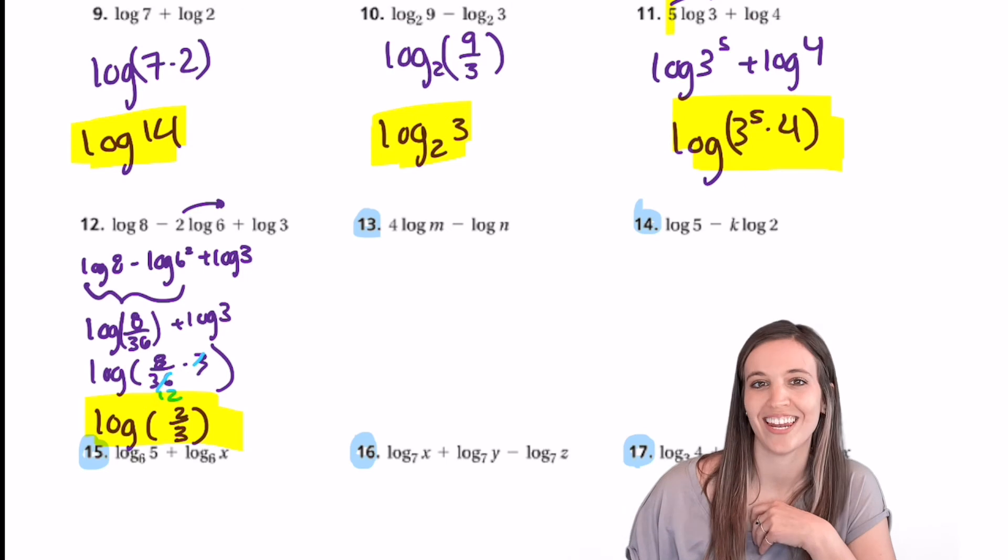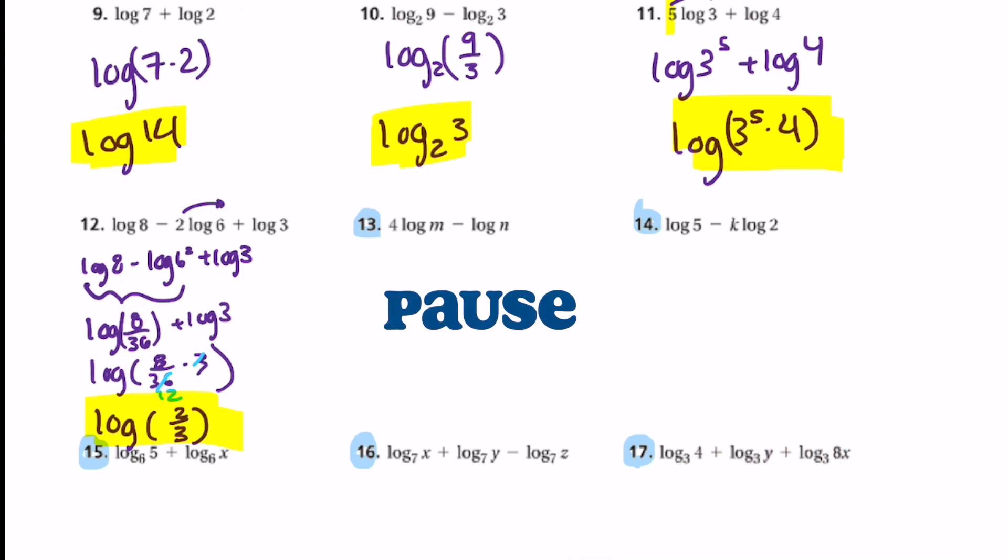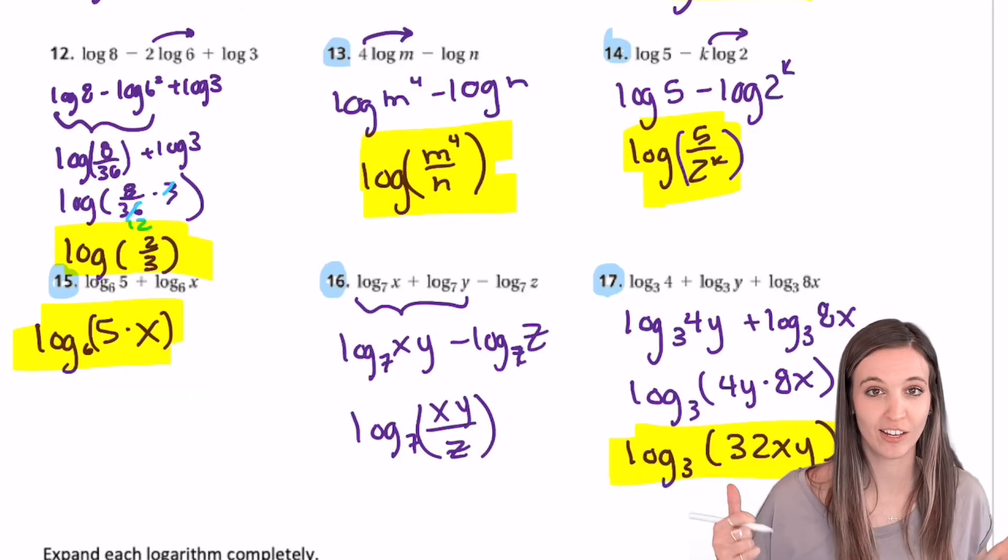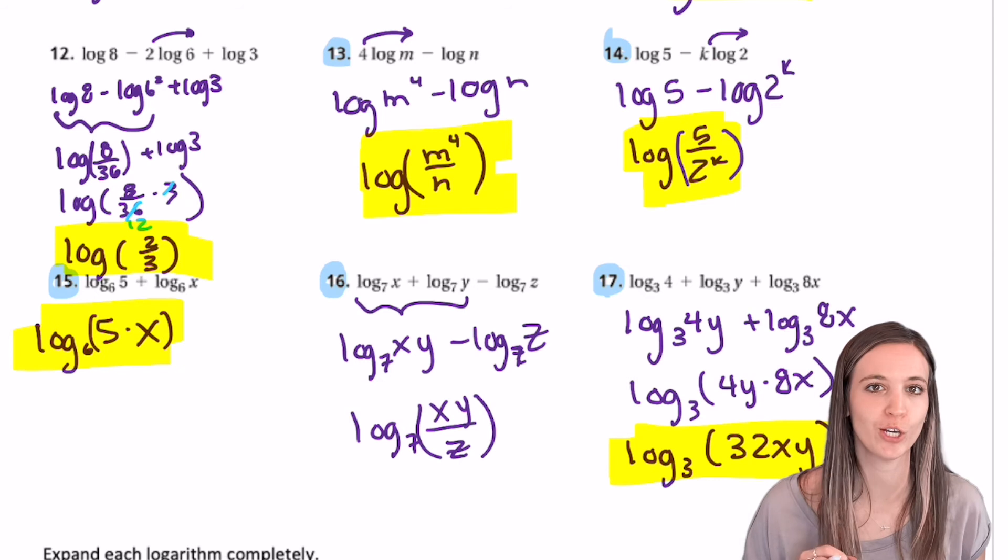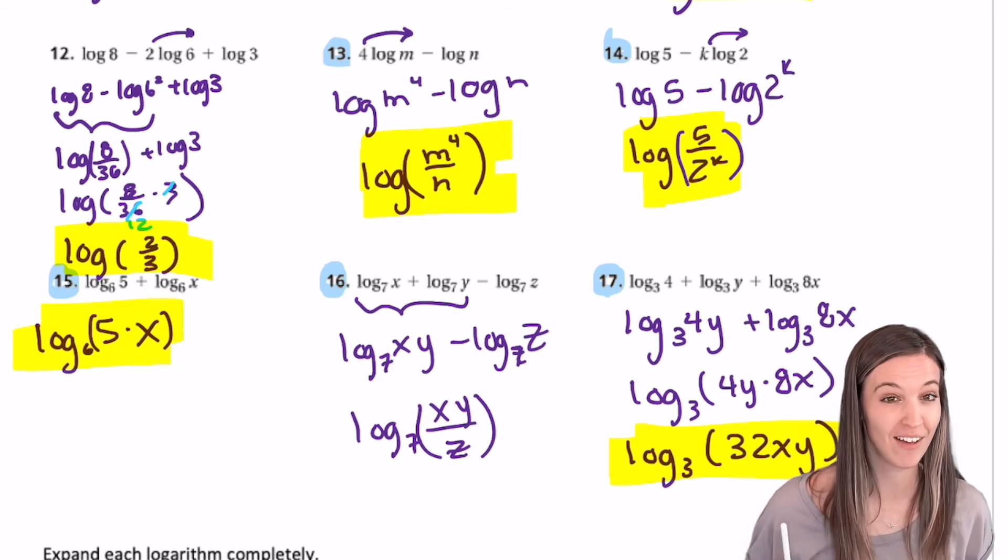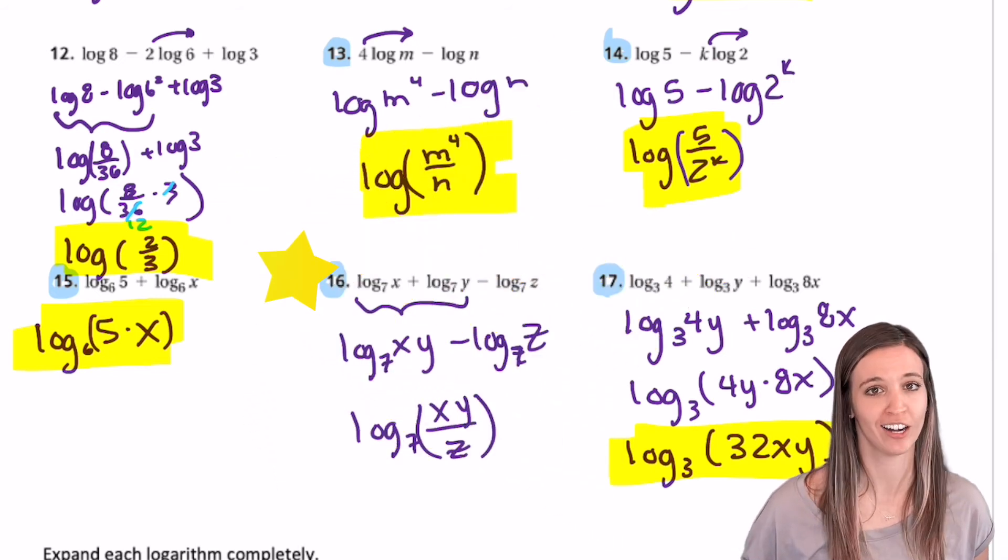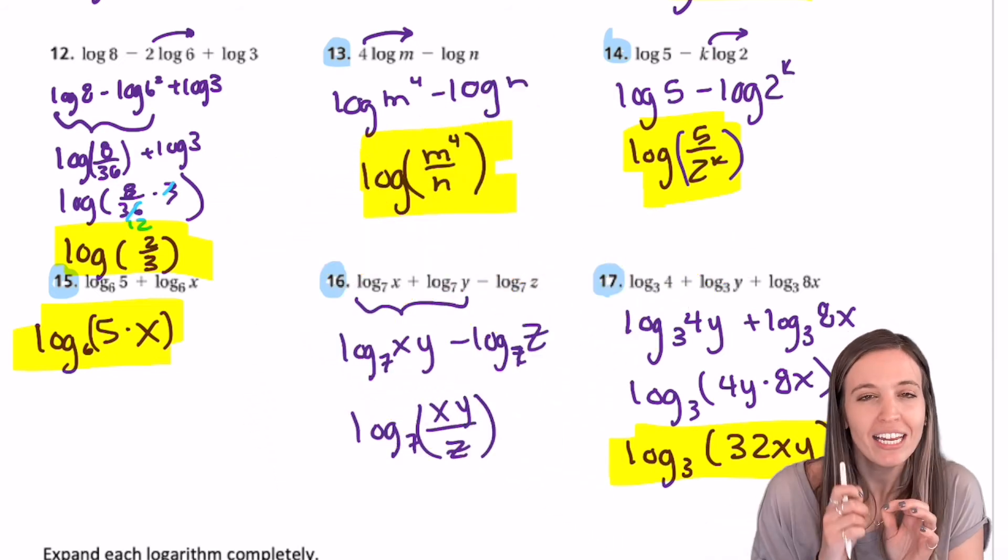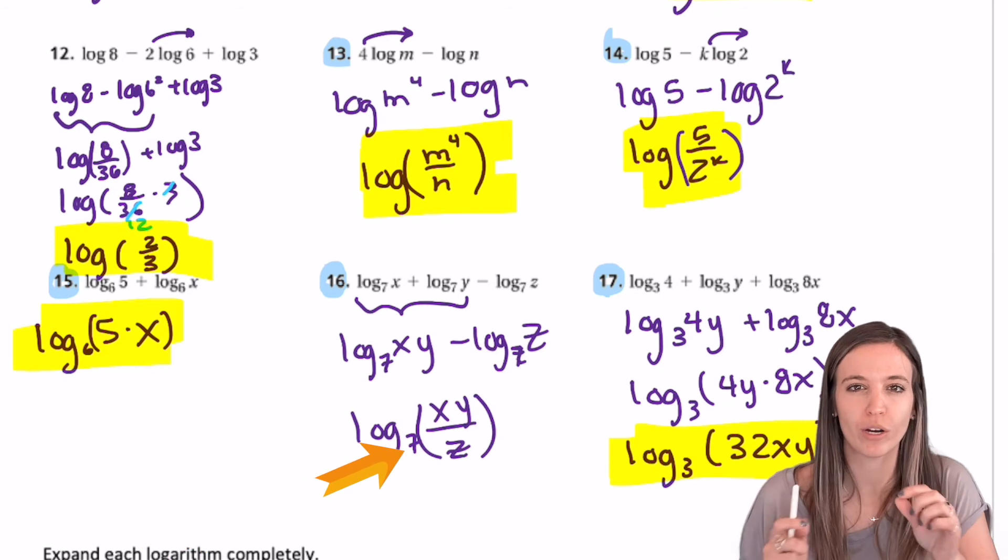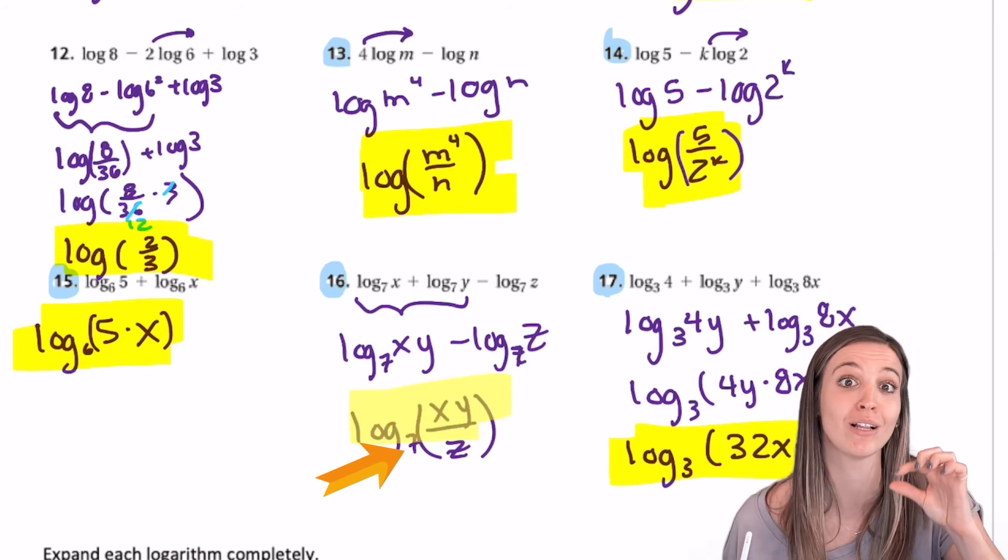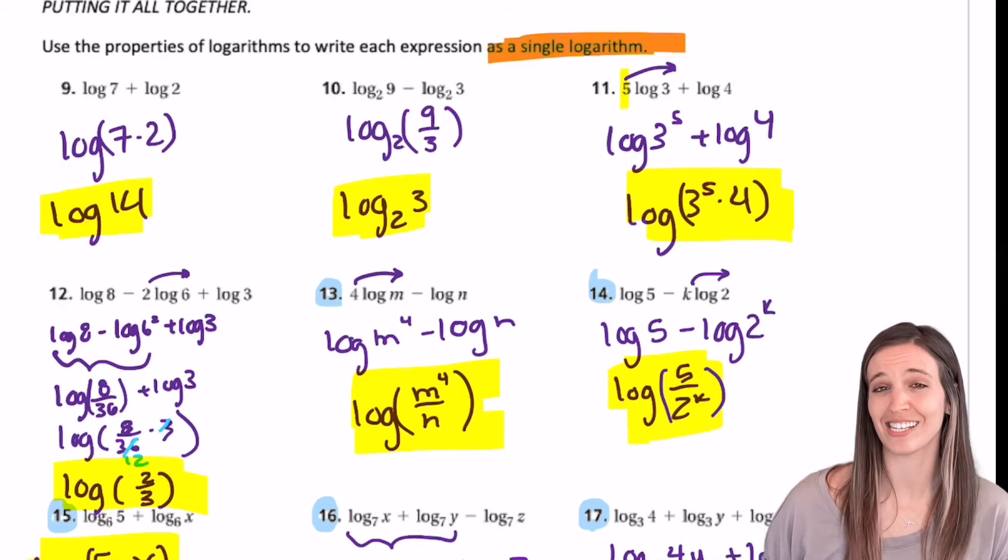Why don't you go try the next 5? Okay, check your answers. See if you're doing good. Really take a close look at 16. Did you get log base 7 of x, y divided by z? If you did, gold star. Remember that anytime we need to write that base of a log, really make sure you're writing the base below.